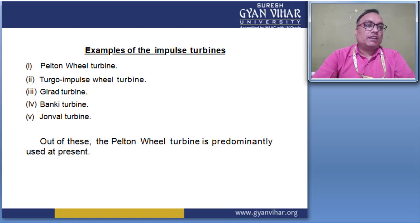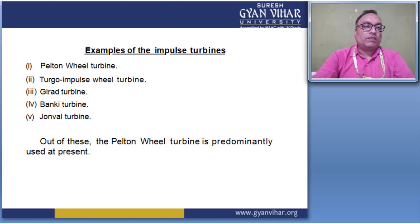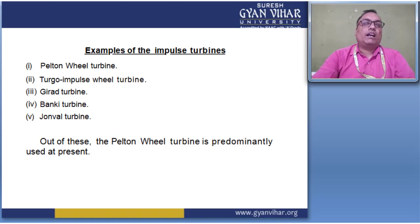Different types of impulse turbines include: the Pelton wheel turbine, which is very famous for electricity production; the Turgo impulse wheel turbine; the Girard turbine; the Banki turbine; and the Jonval wheel turbine. Out of these, only the Pelton wheel turbine is predominantly used at present, as it is used in many high head applications.